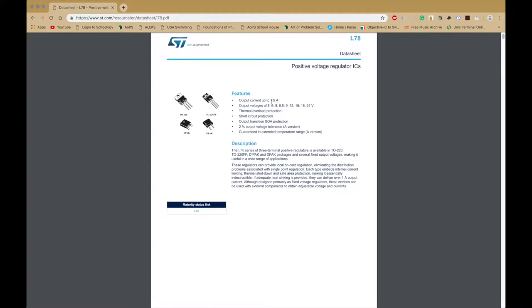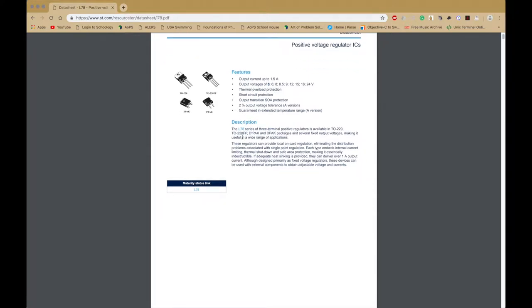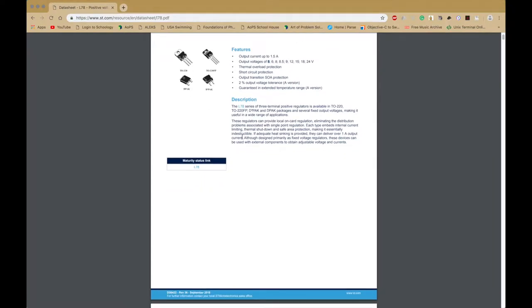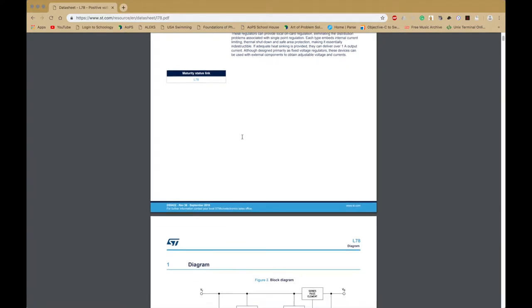Now we have, it can output up to 1.5 amps, and we're using the 5 volt model. The L7805 means 5 volts. It has a bunch of pretty cool things that we're not going to really care about, except for the fact that it outputs 5 volts and it can take in a bunch of voltages.